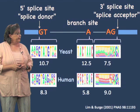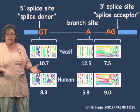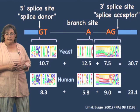Just from looking at the numbers of bits, you can see that human introns have less information in their consensus sequences than yeast introns, even though human introns are many more in number and much longer. When we add up all of this information, the yeast intron sequences clearly have more information in their consensus sequences than humans.